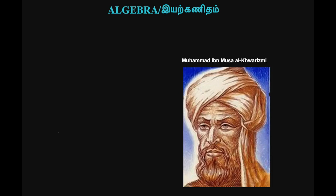The name is Muhammad Ibn Musa Al-Khwarizmi. He was from Persia. In that time, Persia was a different country, covering areas like Iraq, Iran, and Uzbekistan. He was a mathematician and a scholar.